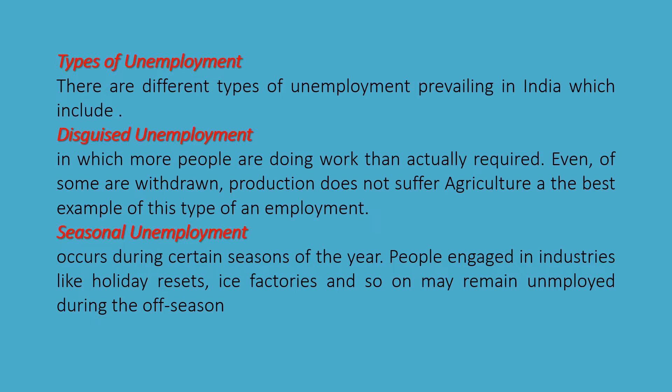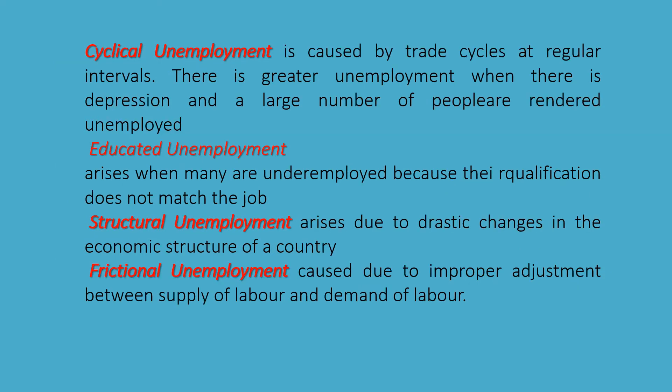Seasonal unemployment occurs during certain seasons of the year. People engaged in industries like hotels, ice factories, and so on may remain unemployed during off-seasons. Cyclical unemployment is caused by trade cycles at regular intervals — there is greater unemployment during a depression when a large number of people are rendered unemployed. Educated unemployment arises when many are underemployed because their qualifications do not match the job. Structural unemployment arises due to drastic changes in the economic structure of a country. Frictional unemployment is caused by improper adjustment between the supply of labour and the demand for labour.